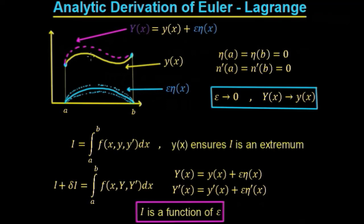Large Y(x) is the original extremum plus a variation, while small y(x) is just the original extremum. We can also see that eta(a) equals 0 and eta(b) equals 0, and the derivatives at a and b are also equal to 0. The functional is written as the integral from a to b of f(x, y, y'). We choose y(x) to ensure that i is an extremum. But if we change epsilon, it changes the actual position of the rope and therefore changes the gravitational potential energy, or the value of i.